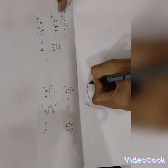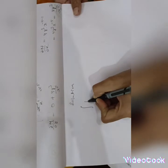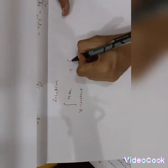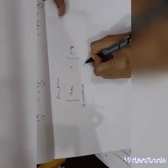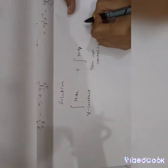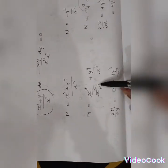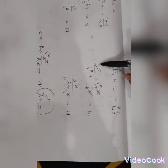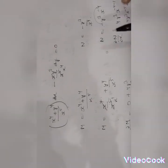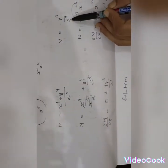Now find the solution. The solution formula for an exact equation is: integrate M with respect to x (treating y as constant), plus integrate the terms of N not containing x with respect to y, equal to C.